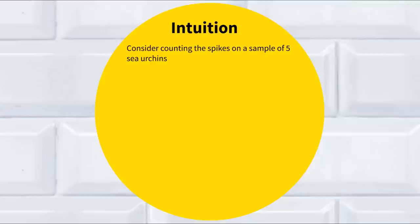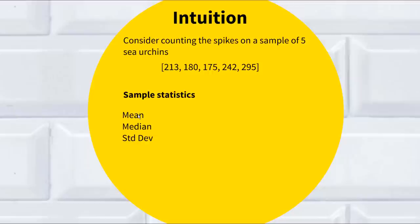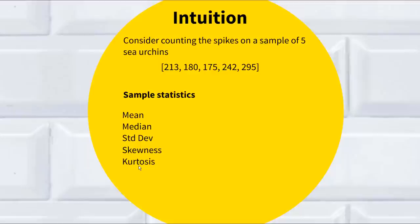Consider counting the spikes on a sample of five sea urchins. Here is our sample outcome — five individual measurements, each pertaining to the number of spikes on five separate sea urchins. You've probably met a few of these sample statistics before: the mean, the median, and the standard deviation. Perhaps you haven't quite touched on skewness and kurtosis. You can get an output like this even from Microsoft Excel — just put in the five values into the descriptive statistics dialog and press the button.